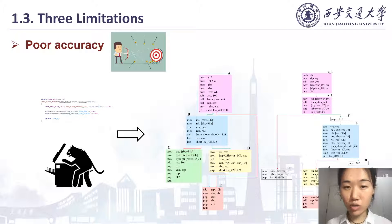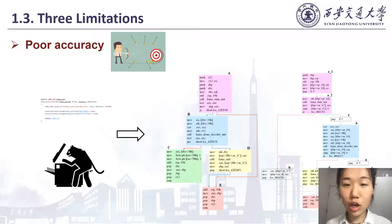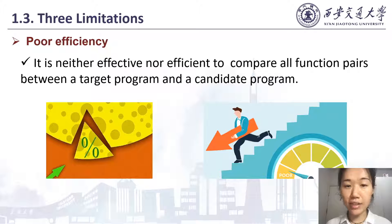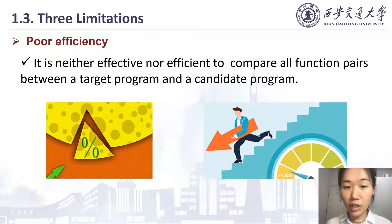Even with the same source code, different compilations will naturally produce different structures and syntax in its binary codes. Most approaches that rely on structure and syntax information fail to deal with the differences caused by variations in compilation. Finally, it is time consuming to measure the similarities of all function pairs between a target program and a candidate program — neither effective when a reused part only makes up a small percentage of a candidate program, nor efficient if an excessive number of function pairs need to be compared.